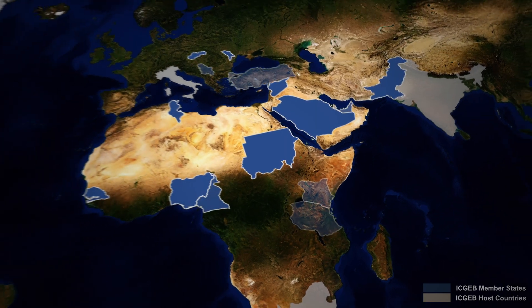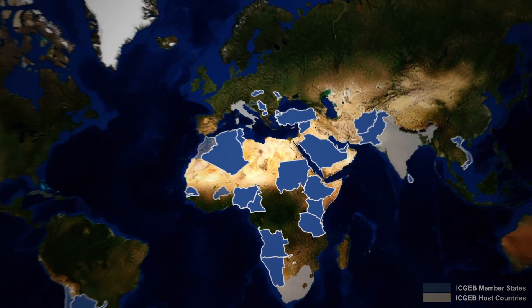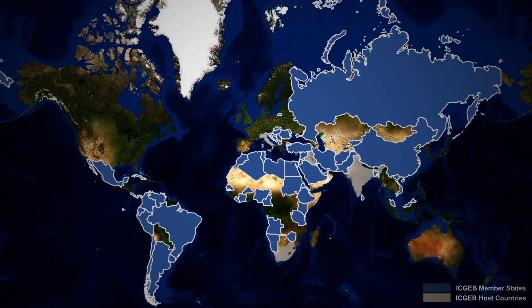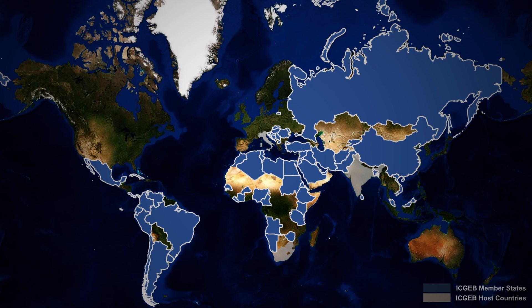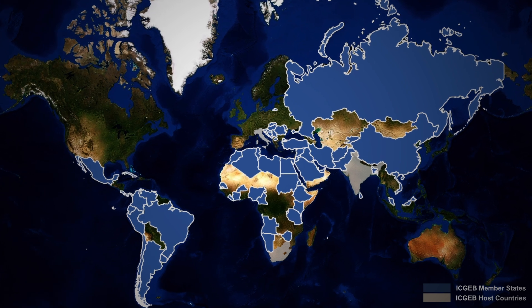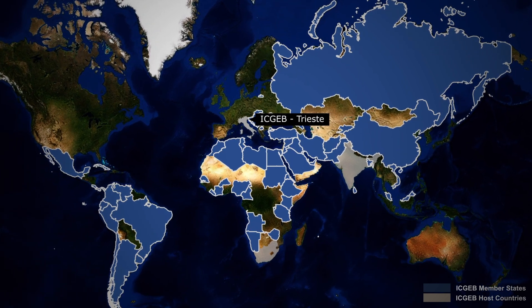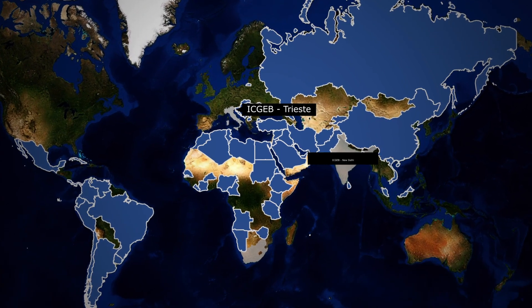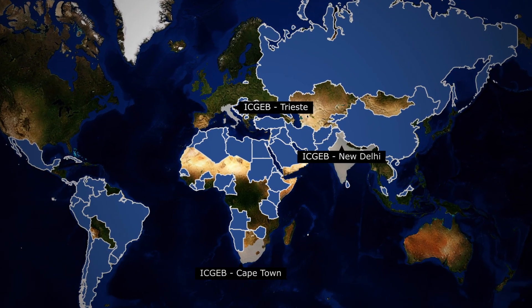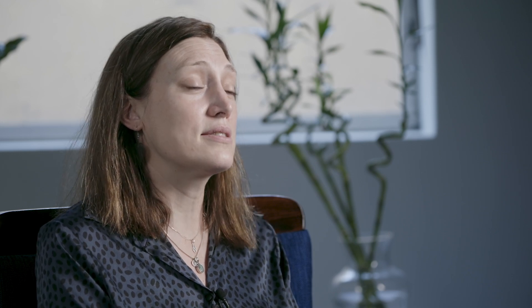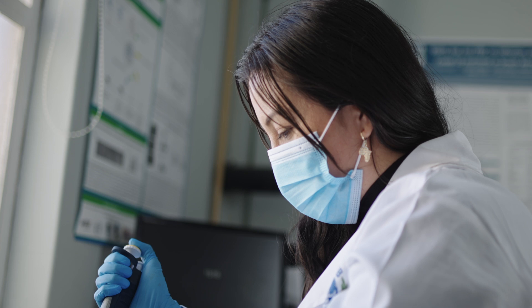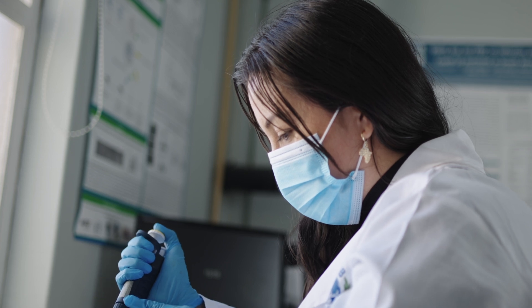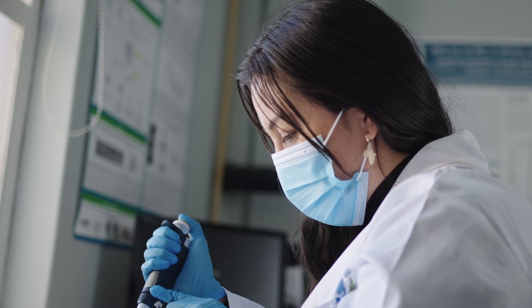ICGEB is a collaborative effort of scientists throughout the world. It's an intergovernmental organization made up of three components in 66 member states, and its mandate is to improve research excellence, training, and technology transfer to the developing world.